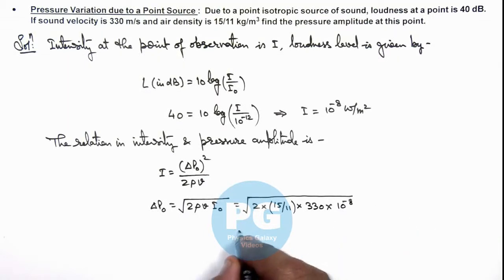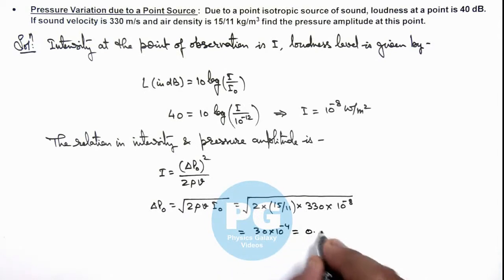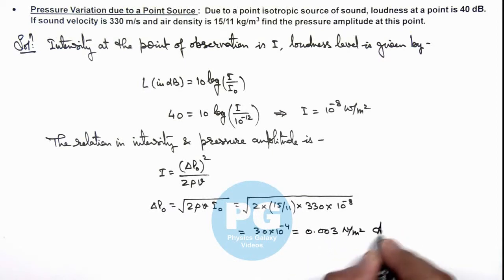This value we are getting is 30 into 10 to power minus 4, numerically which is 0.003 newton per meter square. That is the result of this problem.